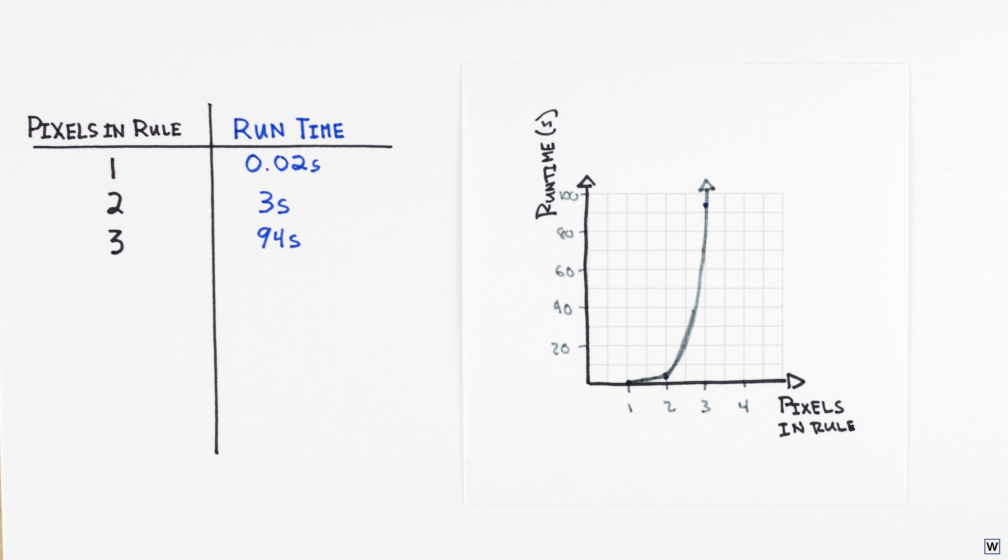Our run times should be roughly proportional to the number of rules we test and the number of examples we test each rule on. As we increase the complexity of our rules by including more pixels, we've kept the number of examples we test each rule on constant, but the number of rules we need to test has increased.